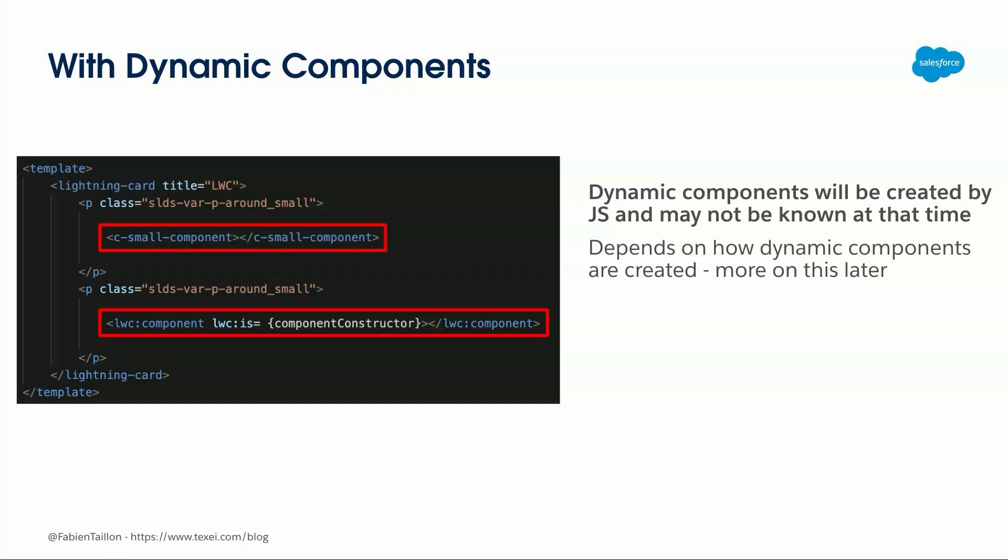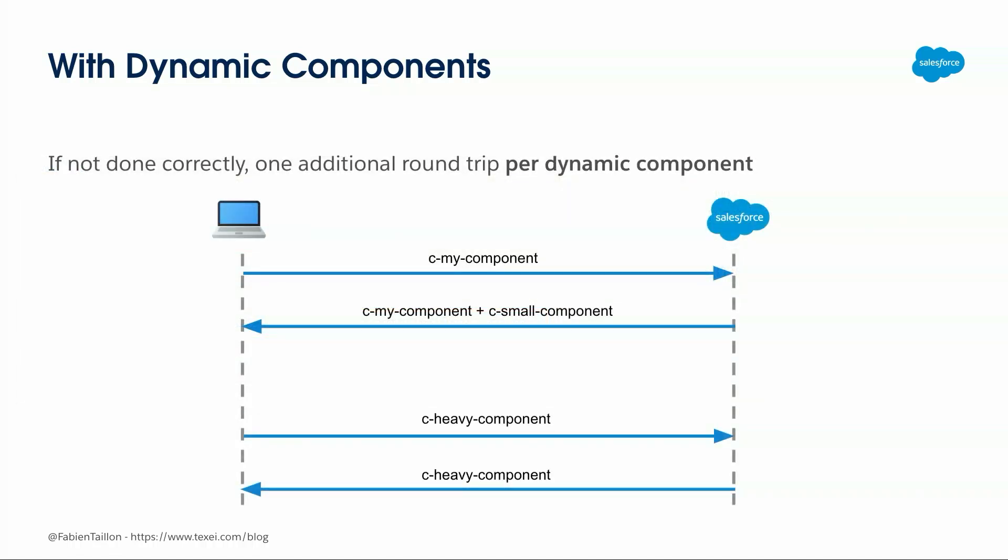It's a little different with Dynamic Components. The first hard-coded component is no problem — Salesforce knows it's there. But the second one may not be known at runtime depending on how you write it. If you don't do it correctly — or intentionally — that means Salesforce returns the component plus the smaller hard-coded ones, and then there will be another round trip to get the dynamically instantiated component. Per my testing, it's one round trip per component. So if you have five Dynamic Components on your page, that's five additional round trips. If it's a small component, you may not notice unless you look at the network — but those round trips make the whole page much slower.